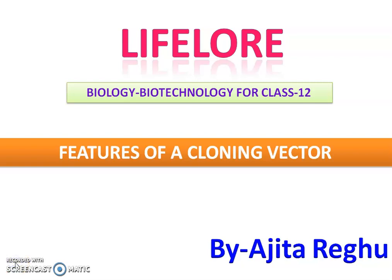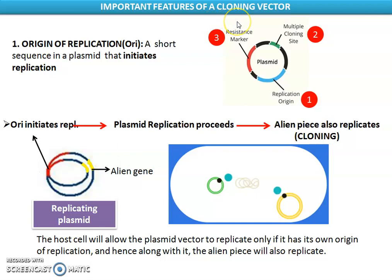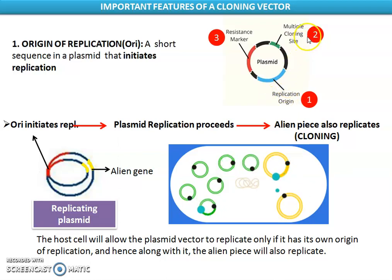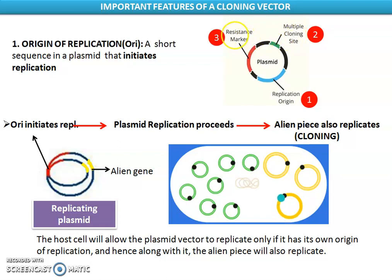Welcome back students. We will talk about features of cloning vectors. A cloning vector is an artificially designed vector that should have certain features which make it more efficient. Some of the important features we will learn: one, it must have a region for starting the replication process called origin of replication. The second feature is multiple cloning sites. The third feature is a resistance marker, which acts as a selectable marker.